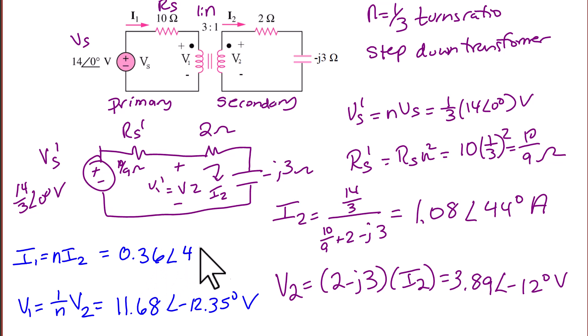All of these equations are positive because V1 and V2 are positive at the dot, and I1 enters the dot while I2 exits the dot. So these are all the positive equations.